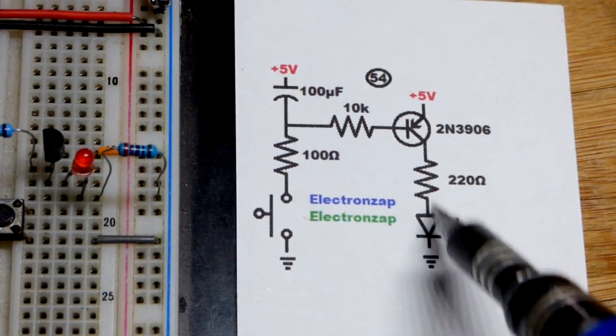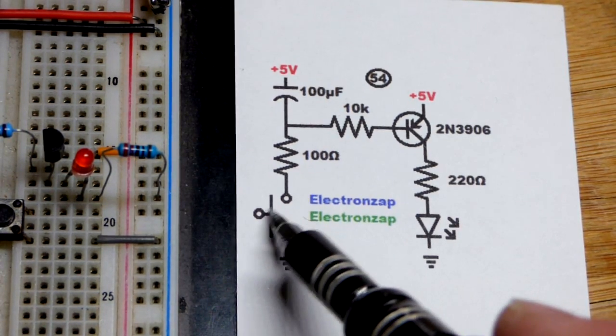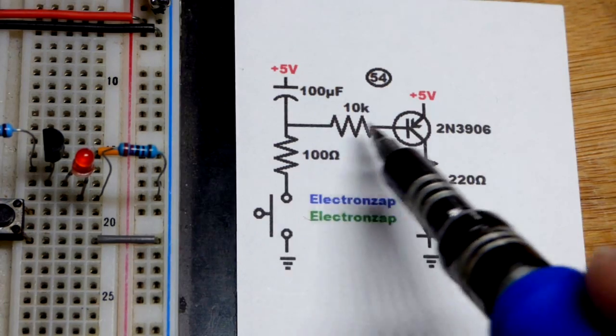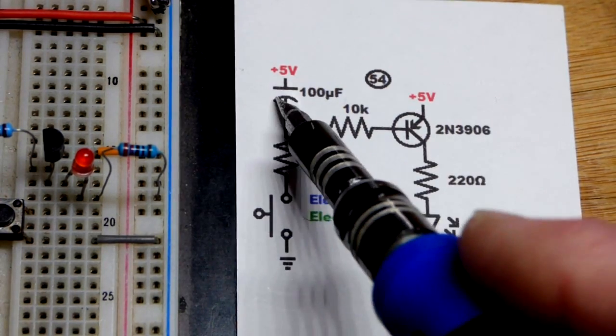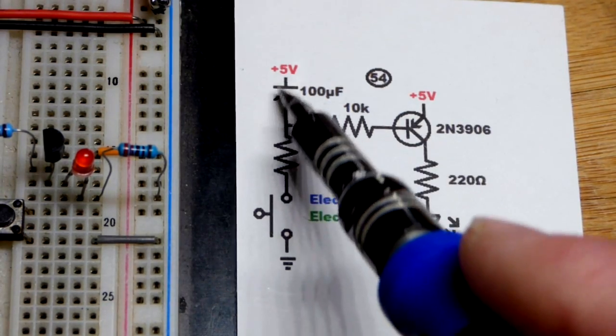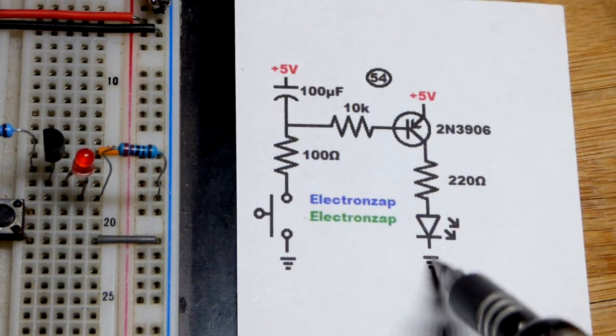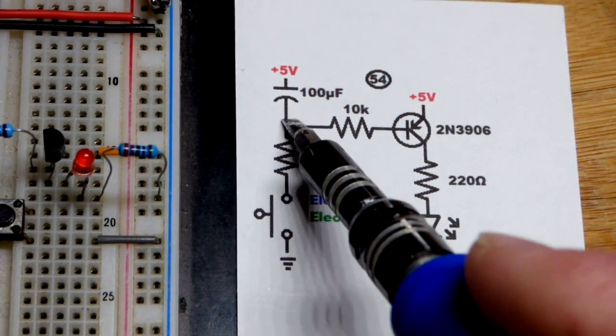When we open the switch though, it cuts off this path, but it doesn't matter. We have the capacitor here, so the capacitor can discharge from emitter to base. Again, a small amount of emitter to base current allows a lot more emitter to collector current.